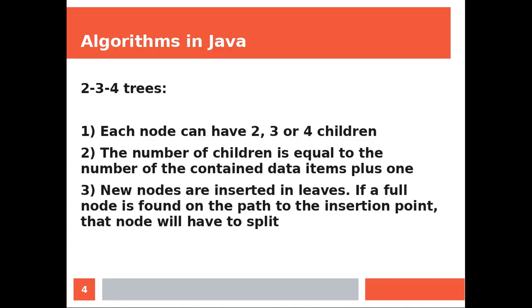New nodes are inserted in leaves. If a full node is found on the path to the insertion point, that node will have to split.